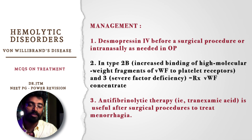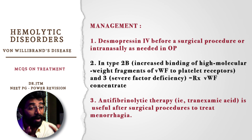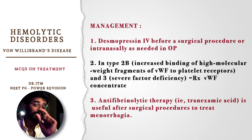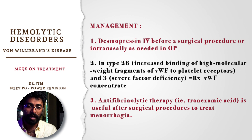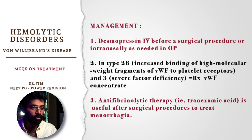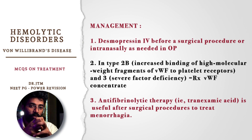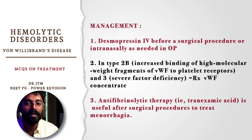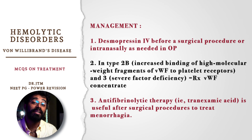In type 2B von Willebrand disease, there is increased binding of high molecular weight fragments of von Willebrand factor to platelet receptors. In type 3, there is severe factor deficiency. These two types — 2B and 3 — are where you use von Willebrand factor concentrate transfusion. Type 3N also exists, and all types will be asked in matching format regarding the specific defect in each.